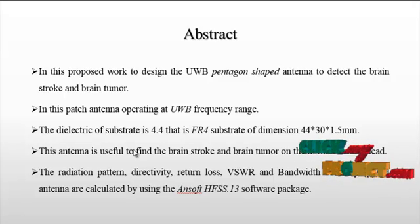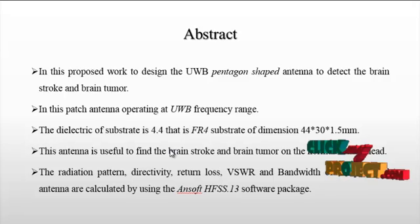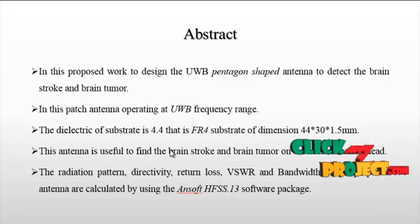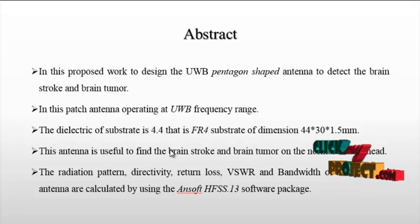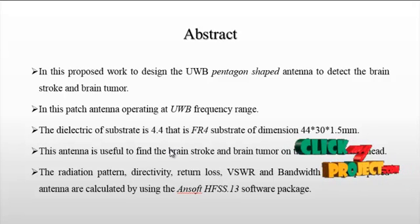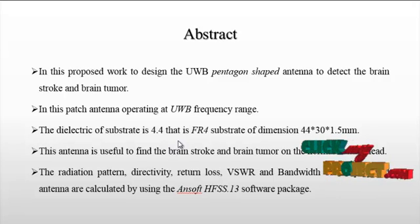In this proposed work, we design the UWB pentagon shape antenna to detect brain tumor and brain stroke. UWB means ultra wideband. This patch antenna operates at UWB frequency — a wide range of frequency from 3 to 12 GHz. That is the frequency range of the UWB antenna.